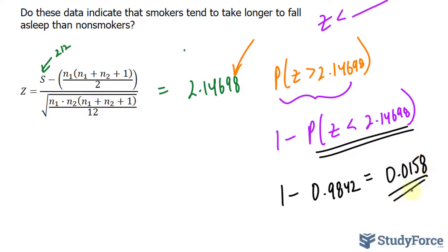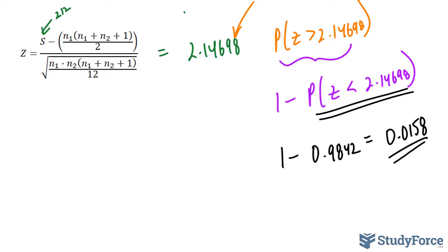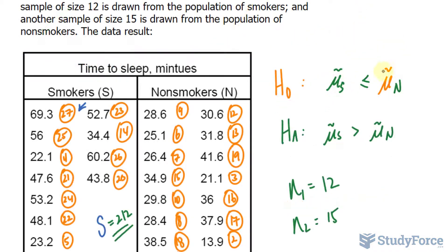We compare that to a significance level of 0.05. 0.0158 is obviously less than 0.05. Now because this value is less than 0.05, we have enough evidence to reject the null hypothesis. So we will be rejecting this in favor of the alternative where smokers take a longer time to fall asleep than non-smokers.